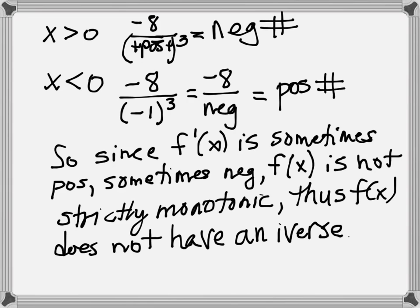How could you verify that f of x does not have an inverse? We could also graph 4 over x squared and see what it looks like — see if it passes the horizontal line test. If we did the problem right, it should not pass the horizontal line test. So we're going to verify that — it's not going to pass, and I'll do it on the board before we're done.